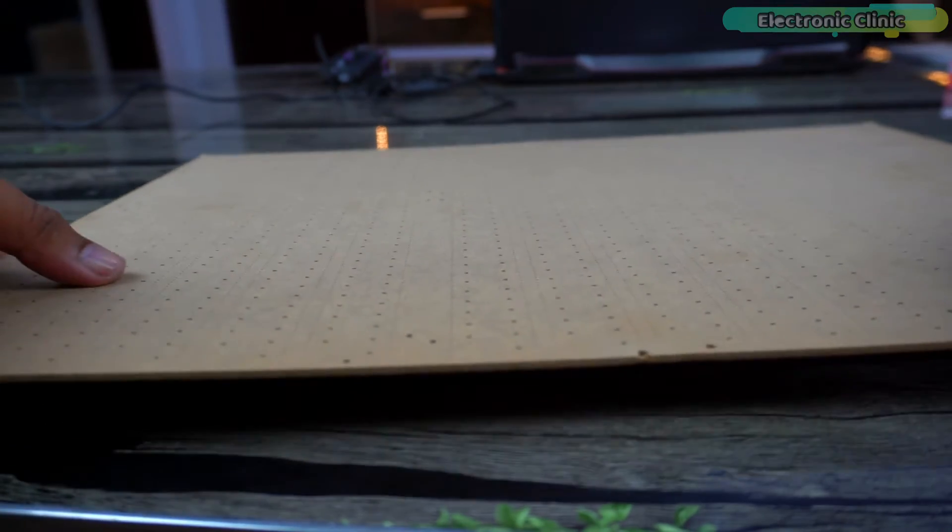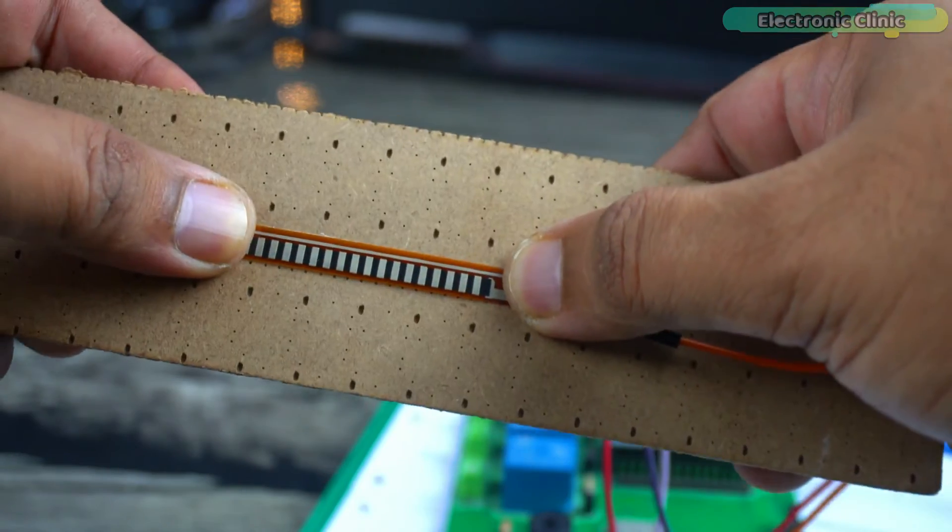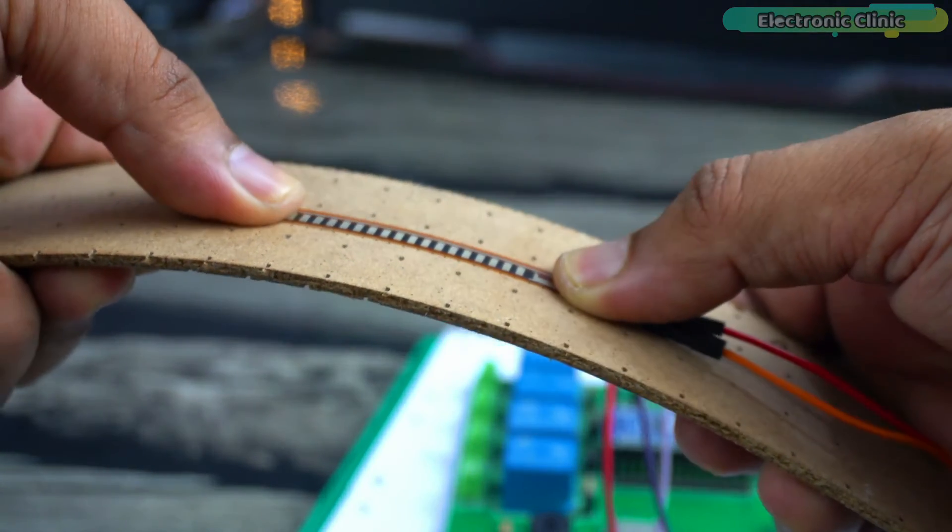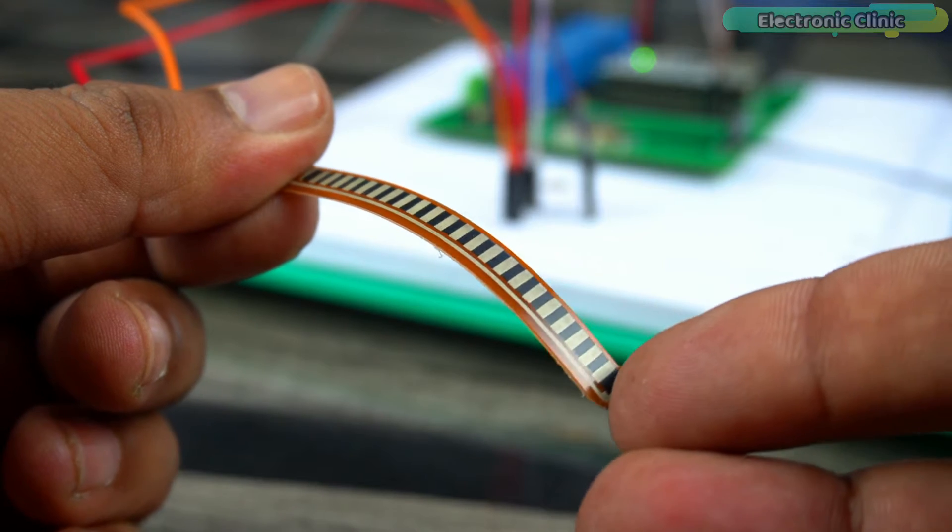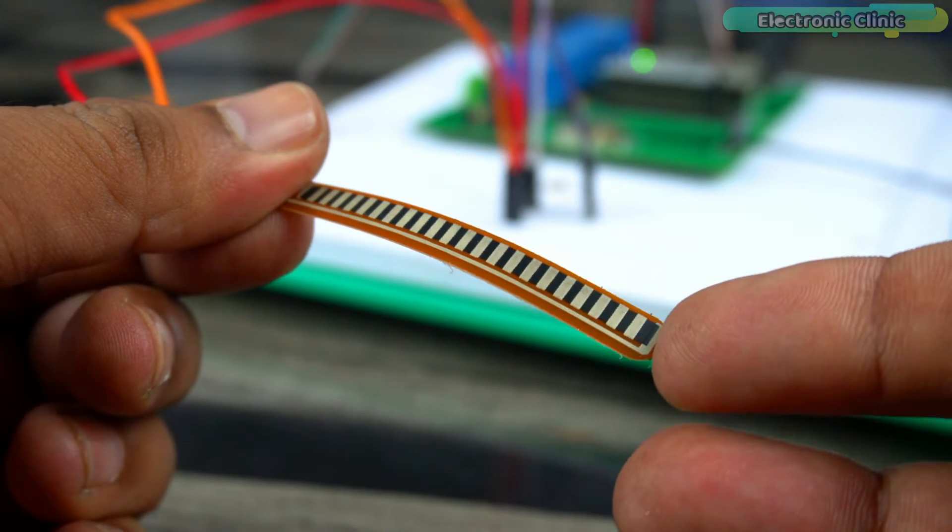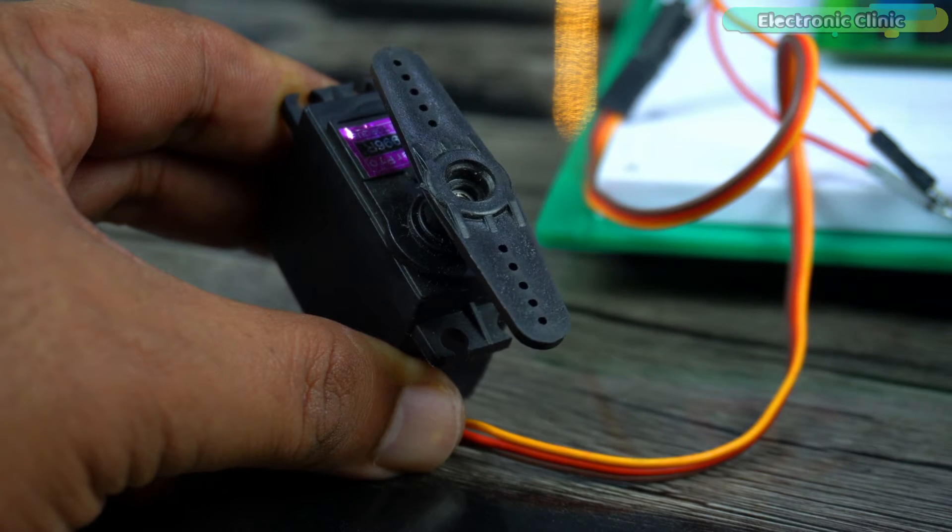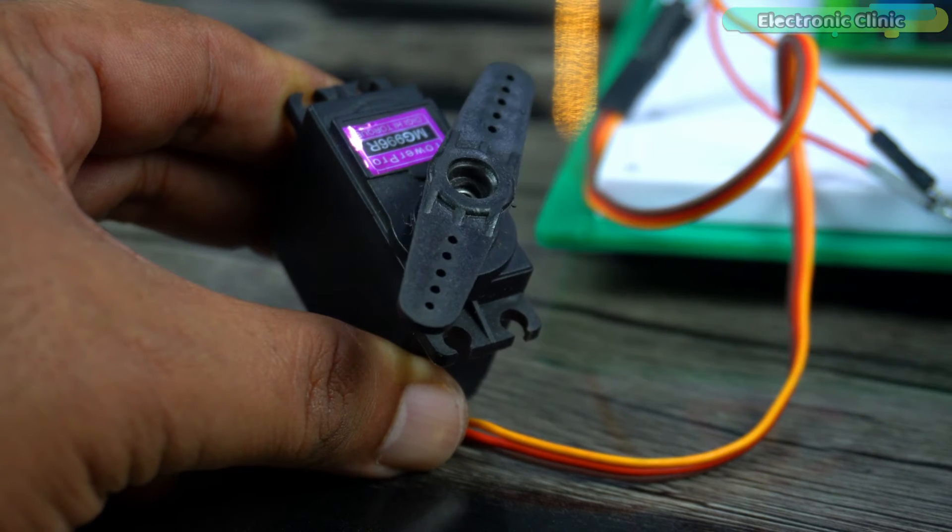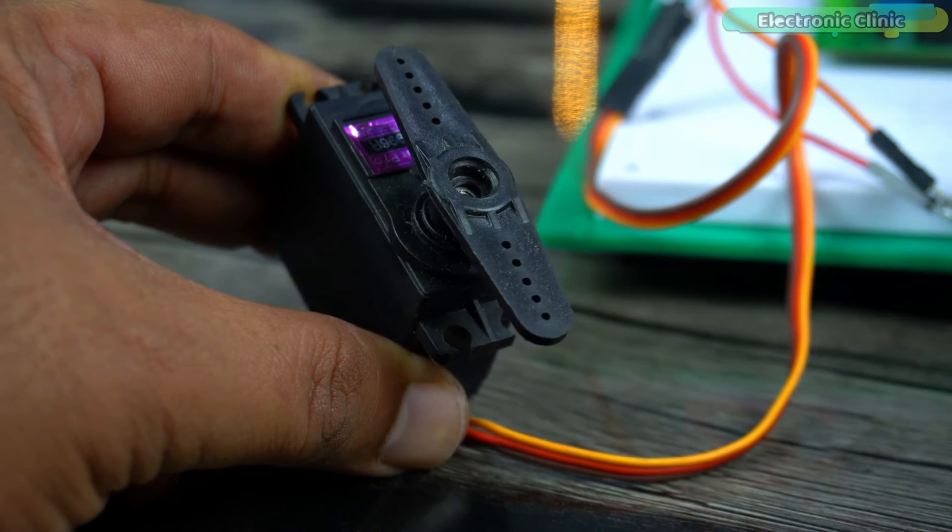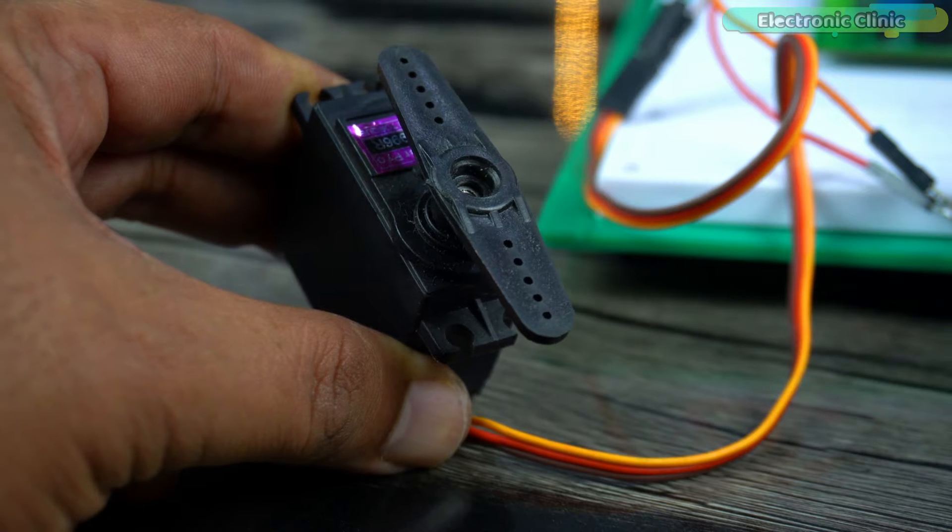While this is a beginner's level project, you can still apply this idea to more advanced and complex level projects. And in the third example, we will use the flex sensor to control the angle of a servo motor. The angle of the servo will change according to how the flex sensor is bent. This idea can also be applied to intermediate and advanced level projects.